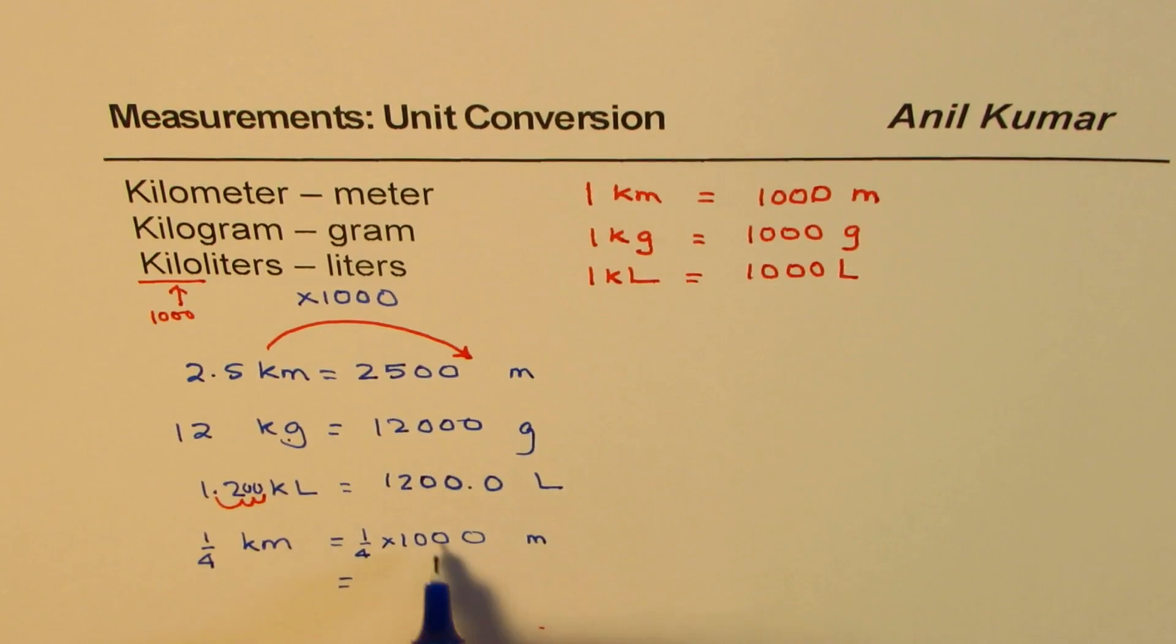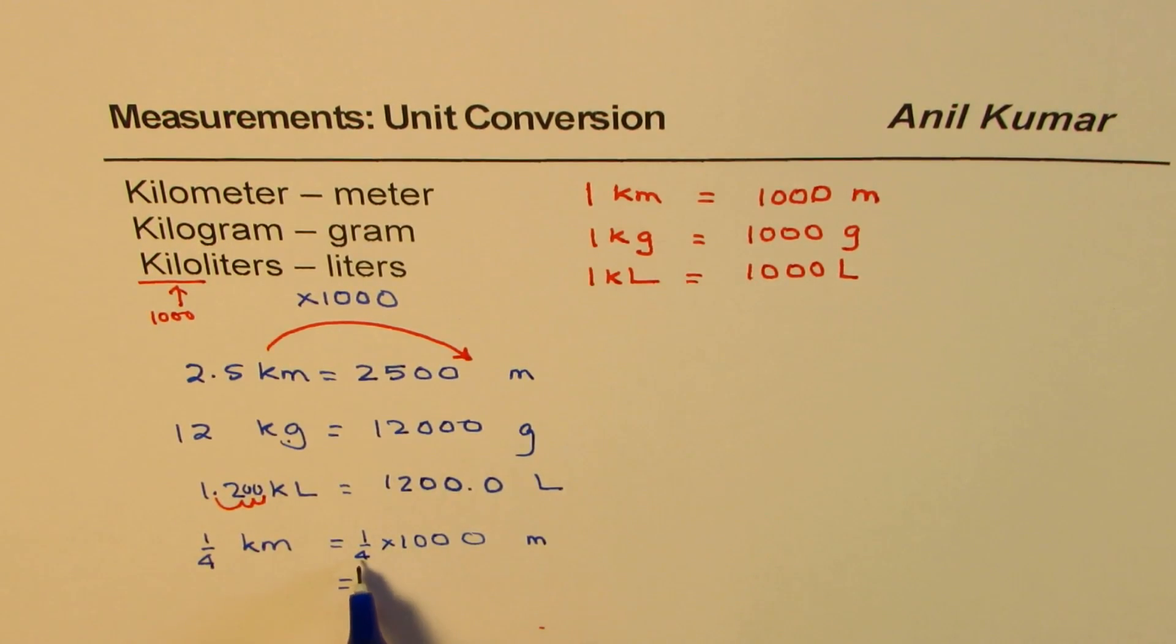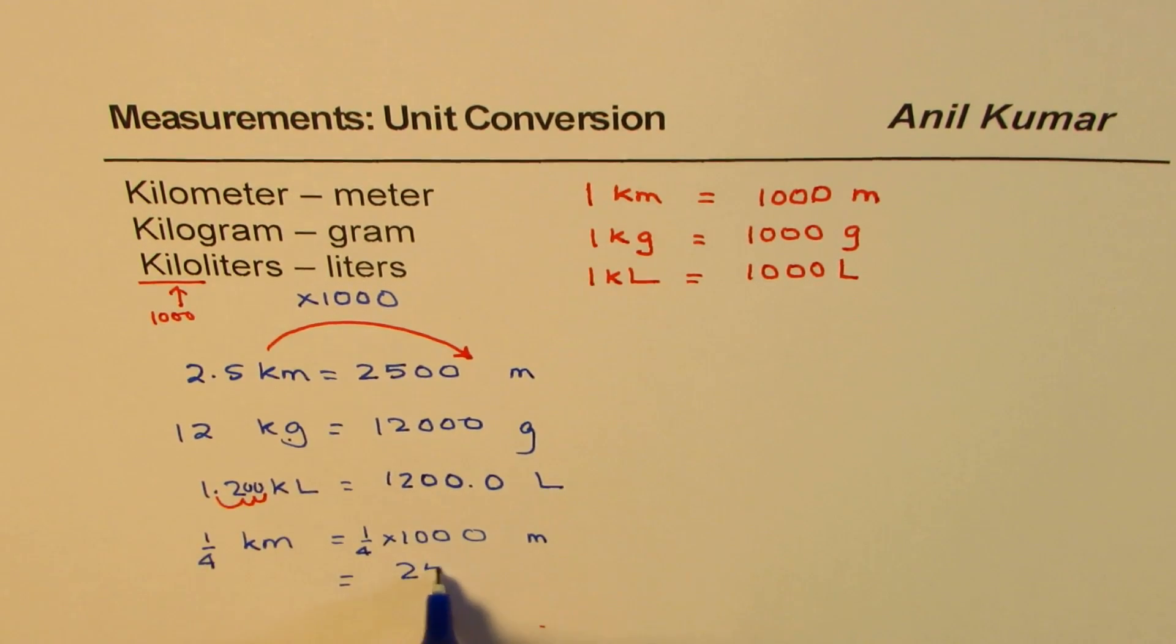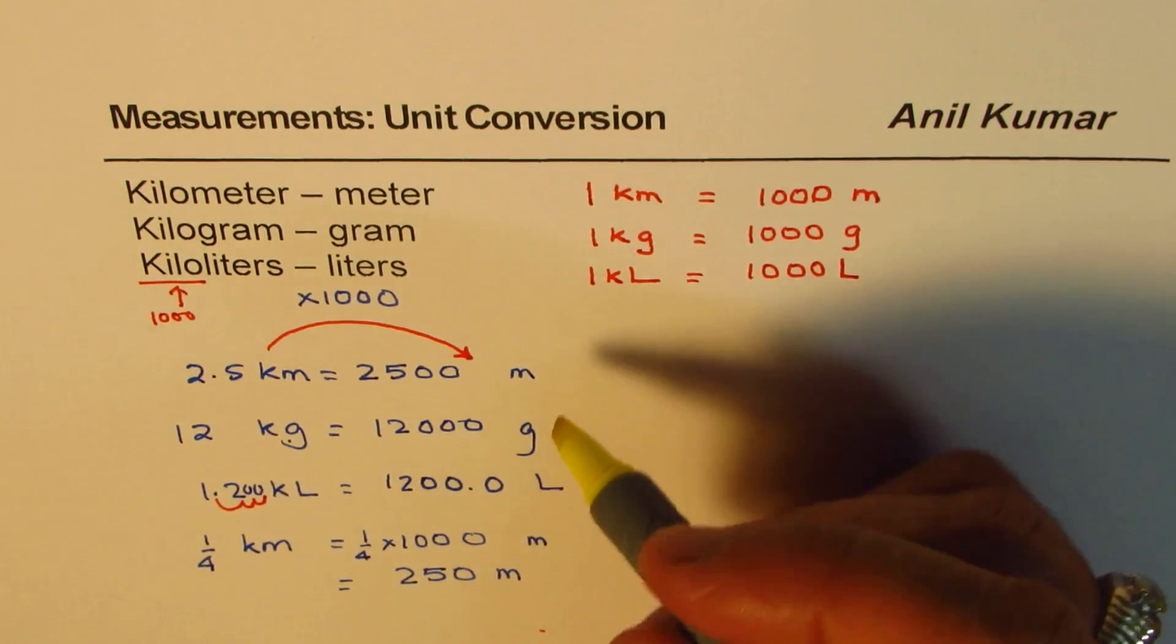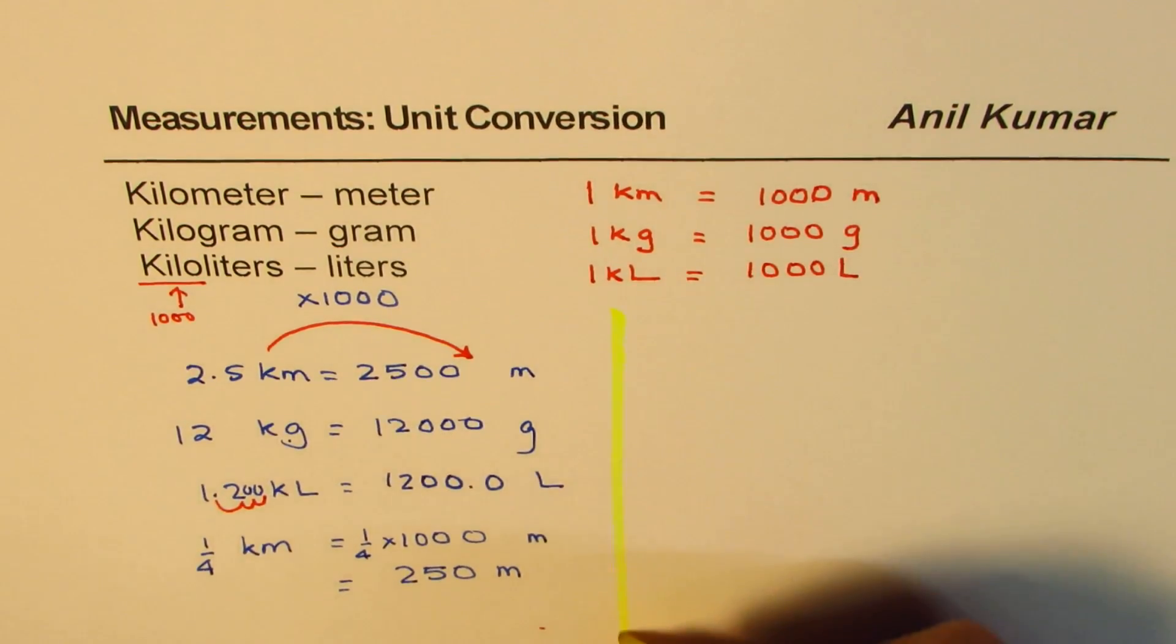Now, that gives you how much? 1,000 divided by 4. Half is 500, and half of 500 is 250. So it gives you 250 meters. So you could do fractions also, just as I have shown you in this particular example. I hope you get the idea.